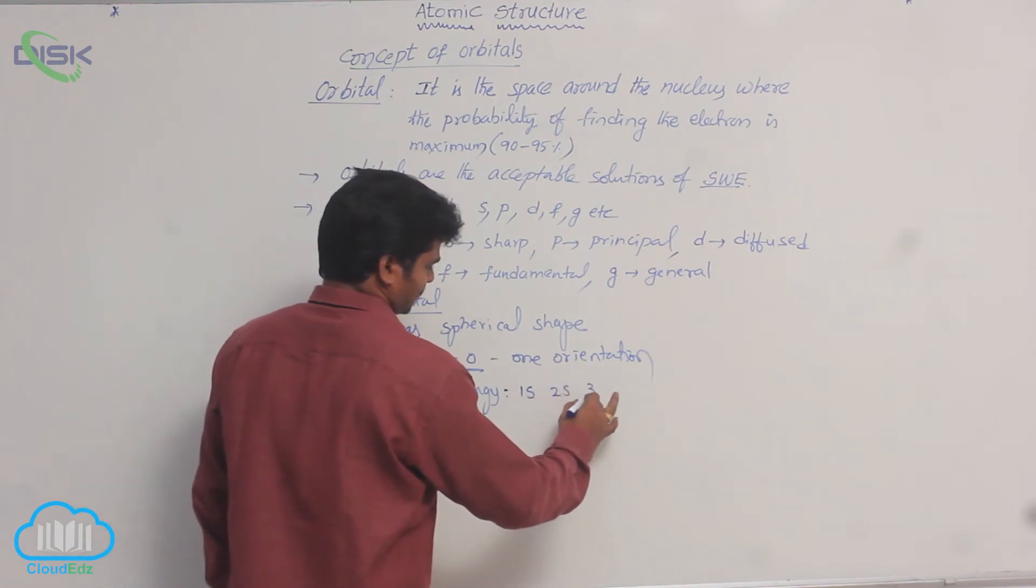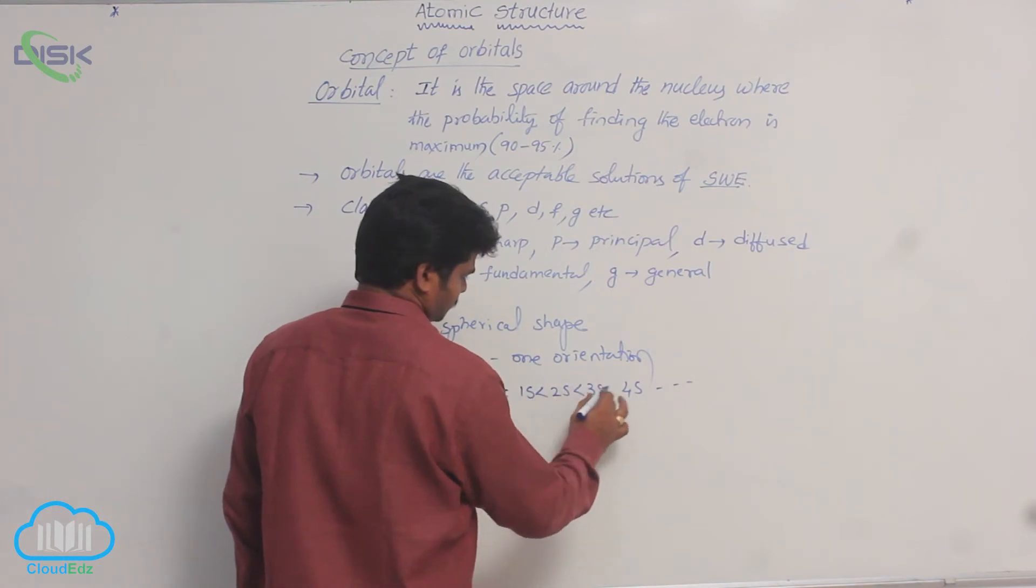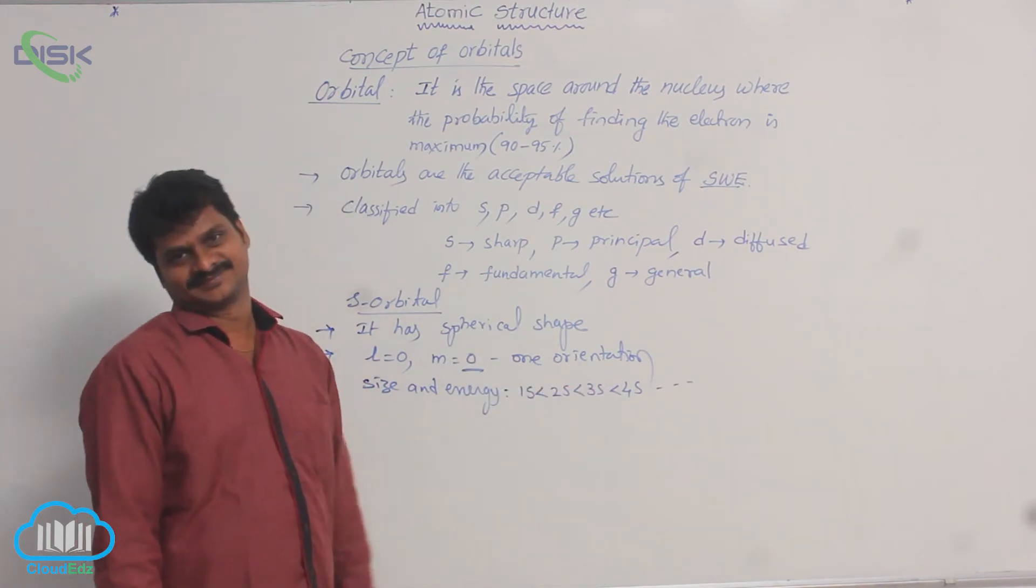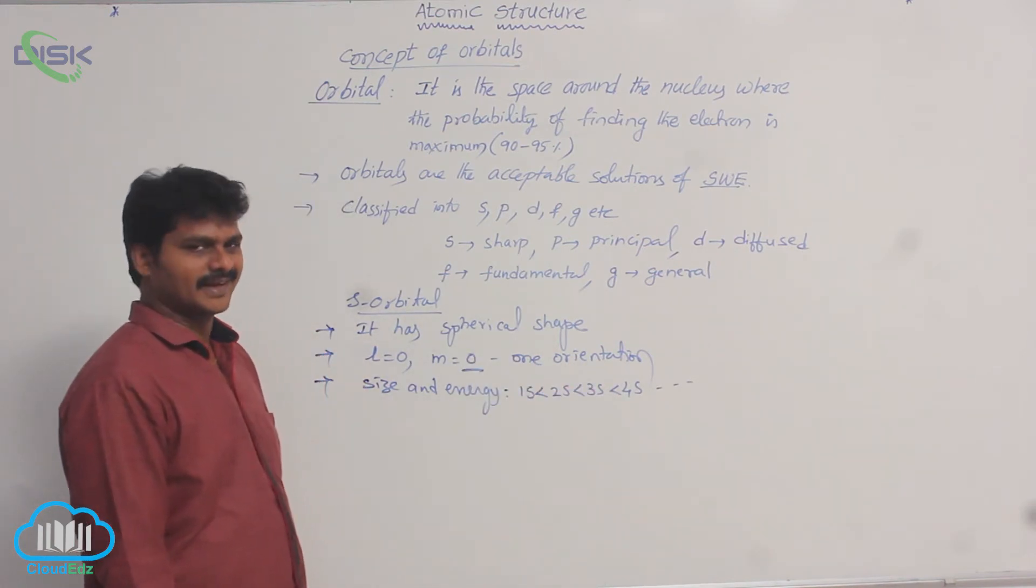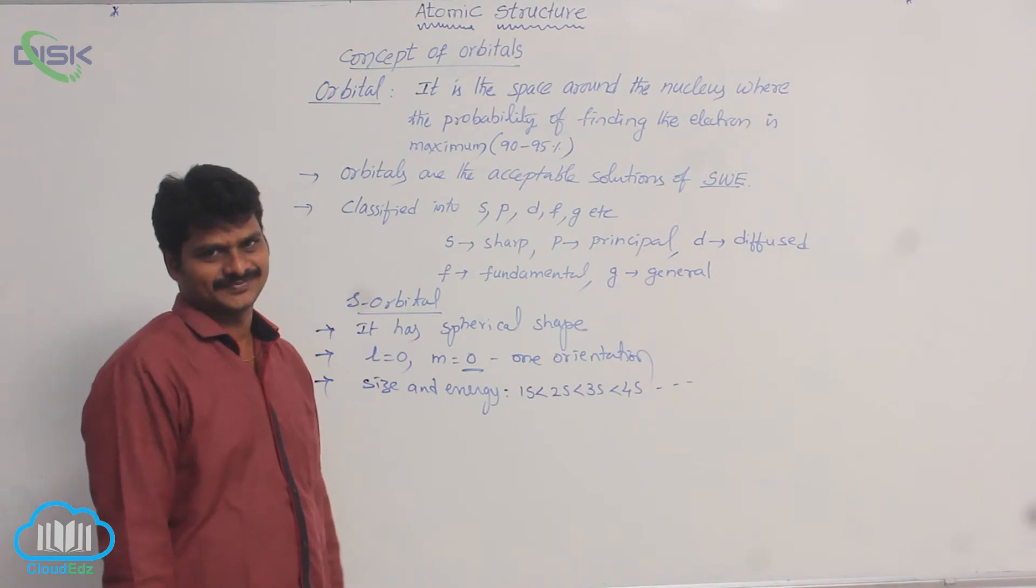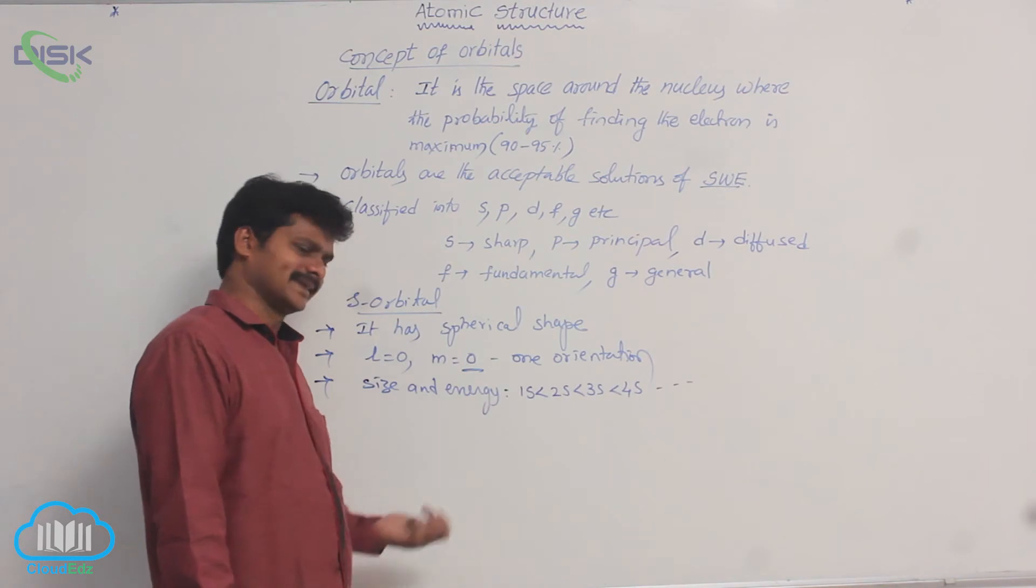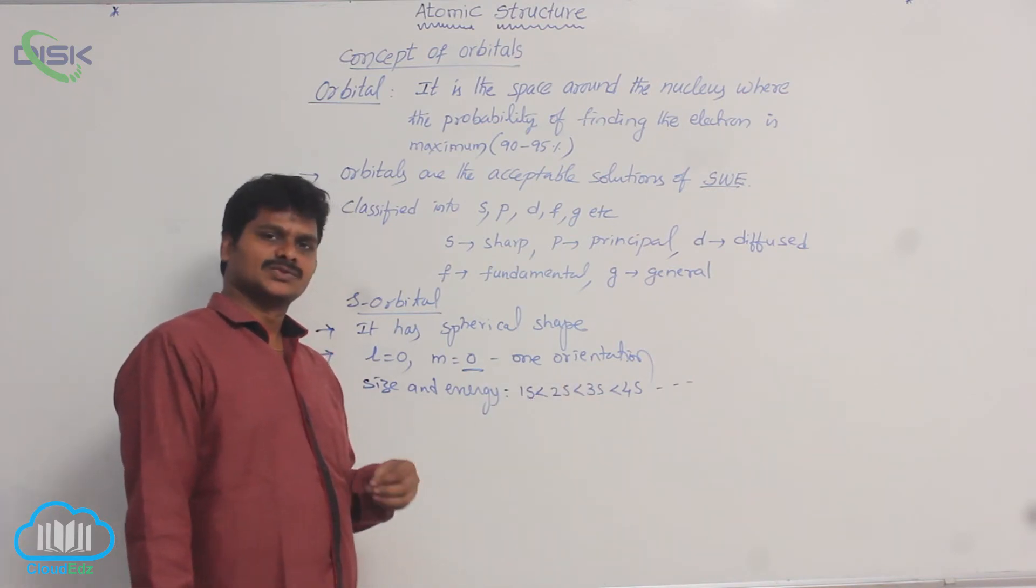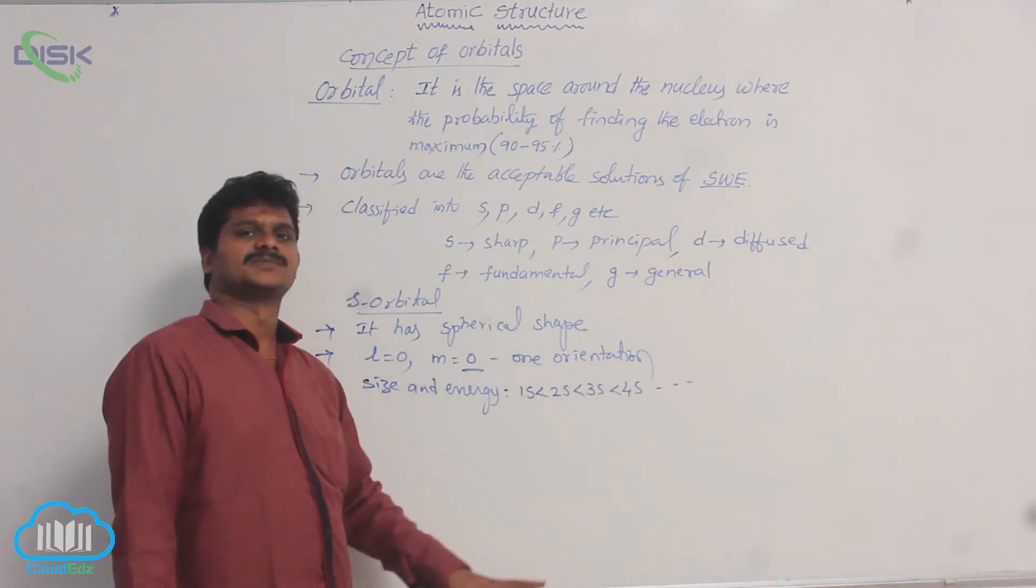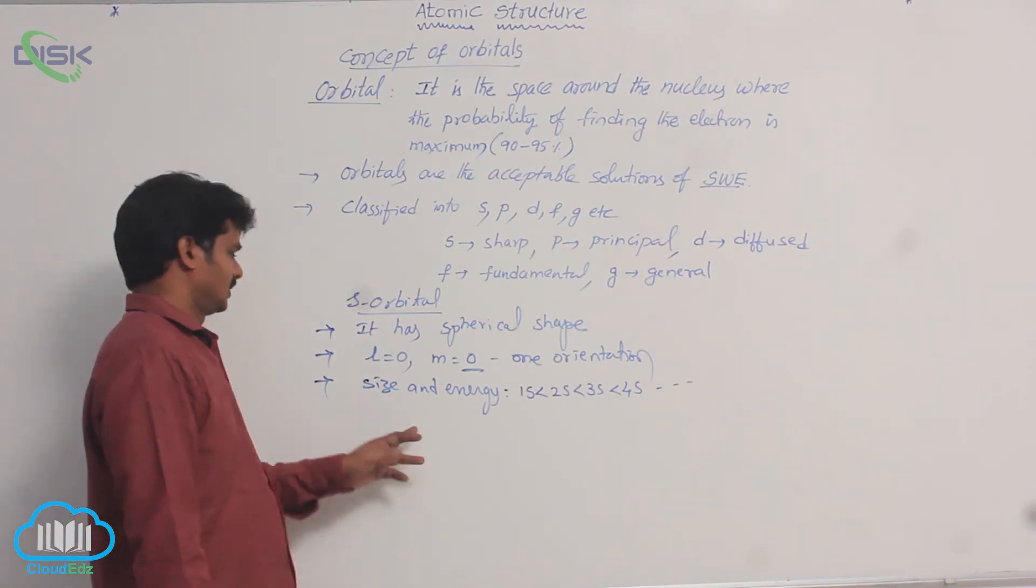See, 1s, 2s, 3s, 4s, and so on. All S orbitals, 1s, 2s, 3s, 4s, all have spherical shape. But the difference is 2s has more size and more energy than 1s. Electron in 2s has more energy than 1s. Similarly, size is more. So size and energy of electron increases with increase in the n value, n value means principal quantum number value.